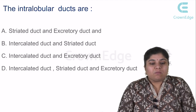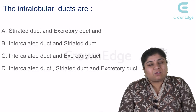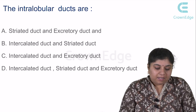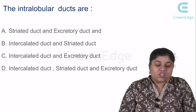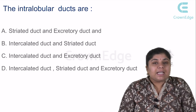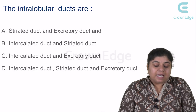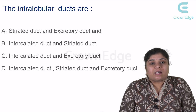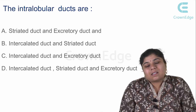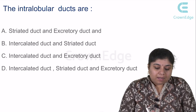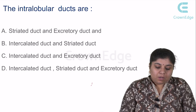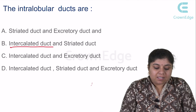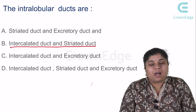Let's see an MCQ — this is also a common viva question. The intralobular ducts are: option A — striated duct and excretory duct; B — intercalated duct and striated duct; C — intercalated duct and excretory duct; D — intercalated duct, striated duct, and excretory duct. The answer is intercalated duct and striated duct are the intralobular ducts.